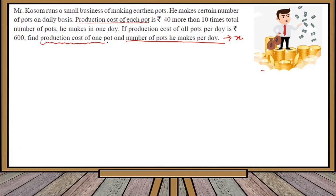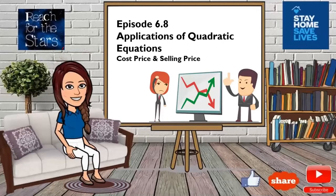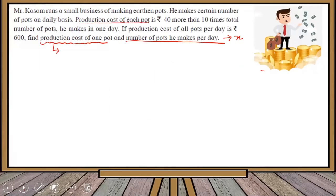This production cost of each pot is 40 more than 10 times the number of pots. So this will be 40 plus 10 times the number of pots. This is the cost of one pot: 40 + 10x rupees.